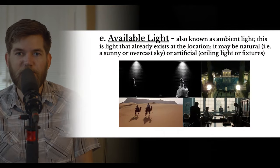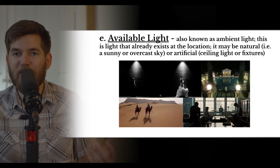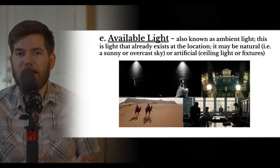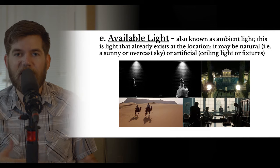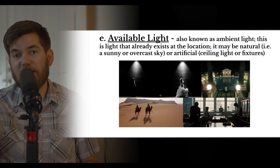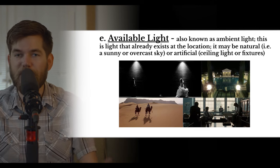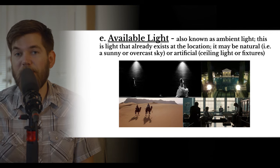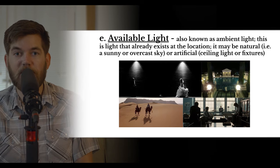When you can't change the lighting of a location, you work with available light, also known as ambient light. Sunlight is an example — it's light that already exists in the setting you've chosen. It may be natural, such as a sunny or overcast sky, or artificial light available to you such as ceiling lights, light fixtures, and lamps already placed in the location. You use framing and mise-en-scene to show that available light the way you want.